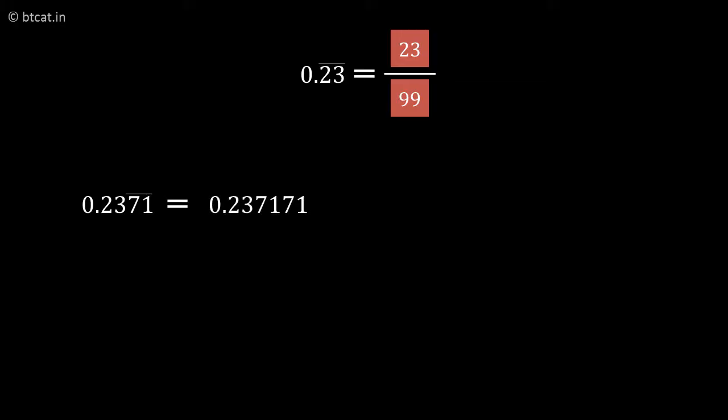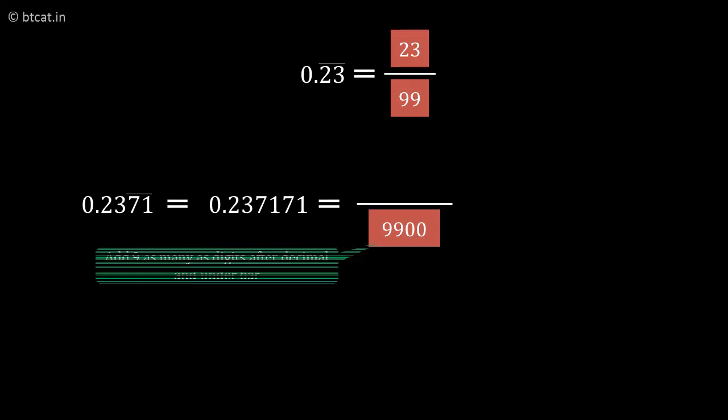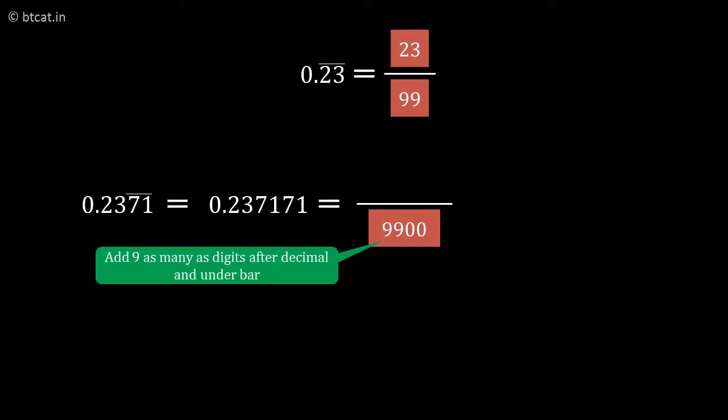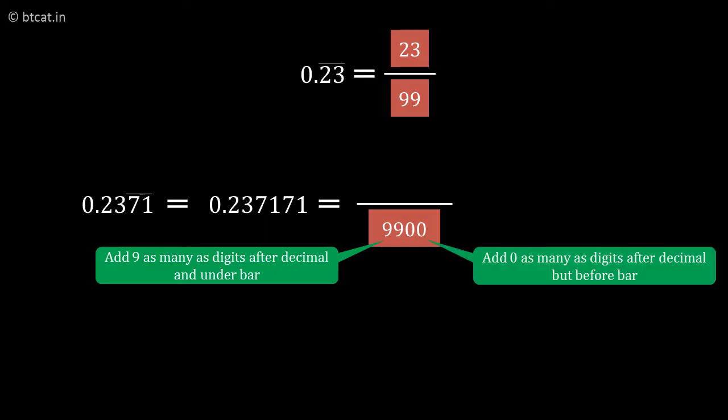The rule says: first, start with the denominator. How many digits have the bar? Two digits. So we put two 9s in the denominator. How many digits are after the decimal and before the bar? Two. So we put two zeros after the 9s. The denominator becomes 9900.